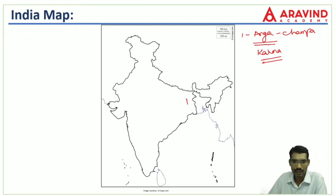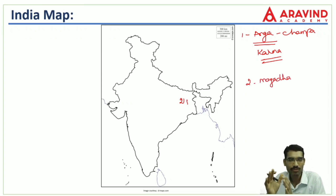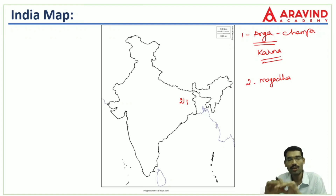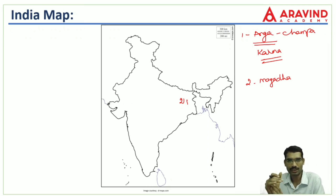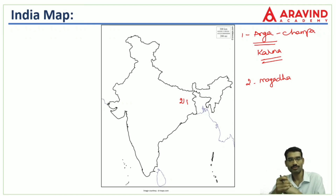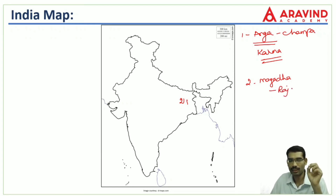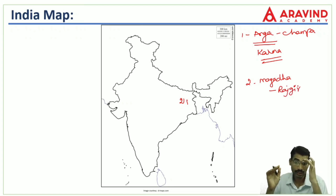Immediately to the left of Anga is Magadha. Magadha was the most powerful Mahajanapada compared with all its neighbors. It is very important and requires special focus — we will study Magadha in detail on a separate sheet. For now, just remember that the capital city of Magadha was Rajgir.